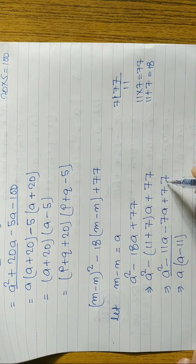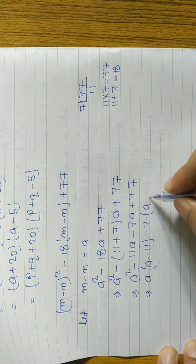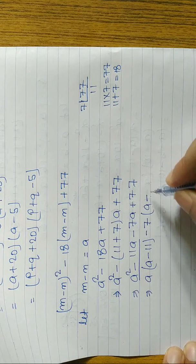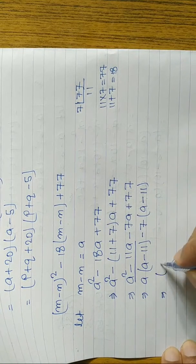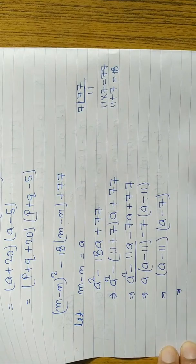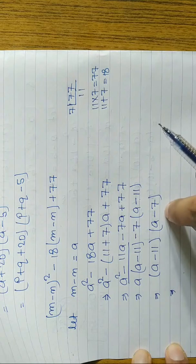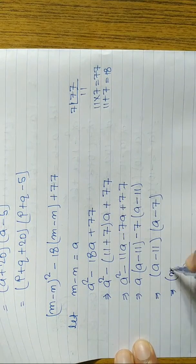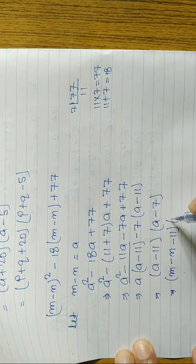From the first two terms, a is common, remaining (a - 11). From the last two terms, -7 is common. When minus is common, we change the sign: 7 × 11 = 77, so remaining is (a - 11). Now (a - 11) and (a - 11) are the same. Take (a - 11) common, remaining is (a - 7). Substituting back a = m - n: the answer is (m - n - 11)(m - n - 7).